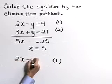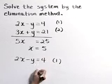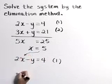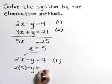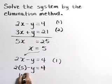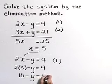Equation 1 is 2x minus y is equal to 4 and let's substitute x equals 5 to get 2 times 5 minus y is equal to 4. That's 10 minus y is equal to 4.